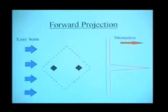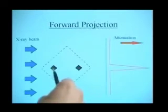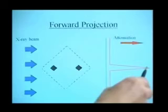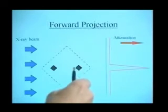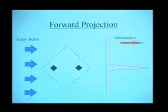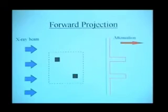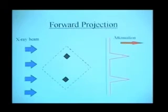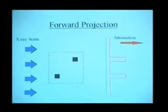However, at 135 degrees, the two squares are in line and therefore we have maximum attenuation corresponding to the maximum path length of these two squares in line. These attenuation profiles and knowledge of the direction of each forward projection are all that's required to reconstruct the original object.